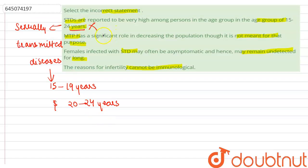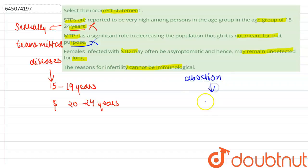MTP has a significant role in decreasing the population, though it is not meant for that purpose. This statement is also correct and the option is incorrect. MTP, which is also known as abortion or medical termination of pregnancy, is defined as medical termination of pregnancy before the fetus becomes capable of living independently.